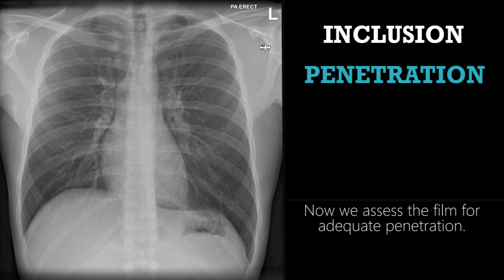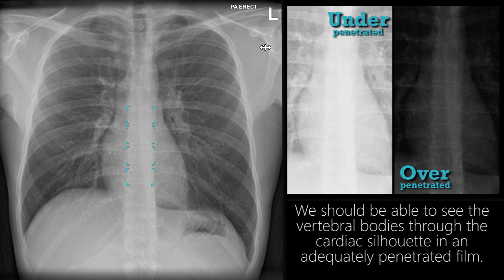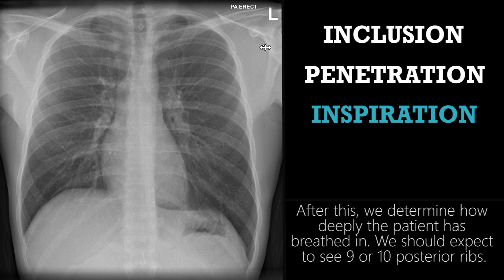We now assess the film for adequate penetration. We should be able to see the vertebral bodies through the cardiac silhouette in an adequately penetrated film. After this, we determine how deeply the patient has breathed in. We should expect to see nine or ten posterior ribs.